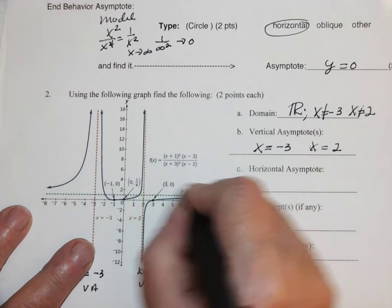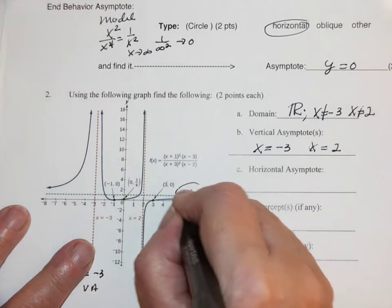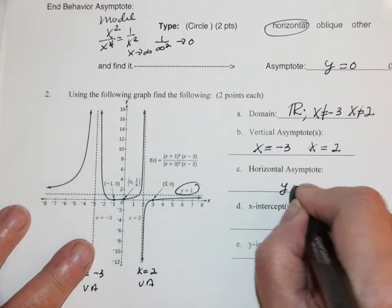Horizontal asymptote. That's this dotted line right here. That's y equal 1.